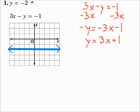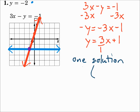We'll graph y equals 3x plus 1 in red. It has a y-intercept of 1 and a slope of 3, which is 3 over 1, so we rise 3 and run 1. Draw the line. These two lines intersect at one point where blue and red make purple, so there's one solution. The coordinates of that solution are negative 1, negative 2.